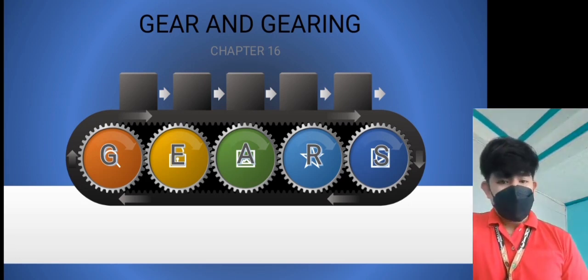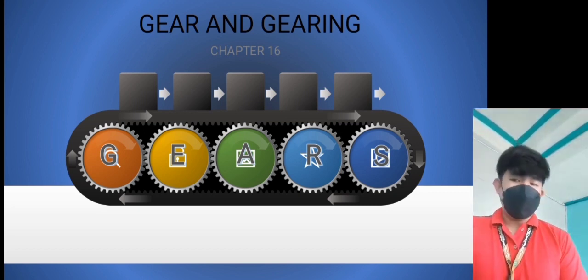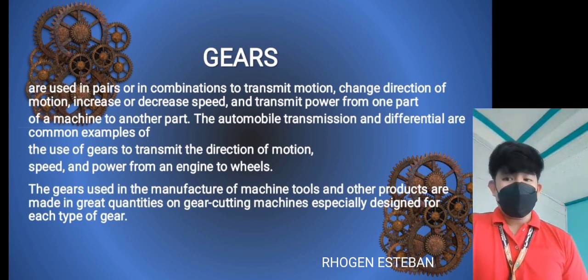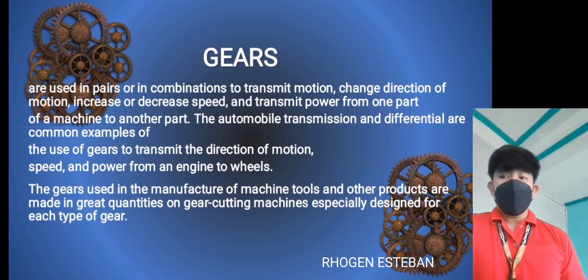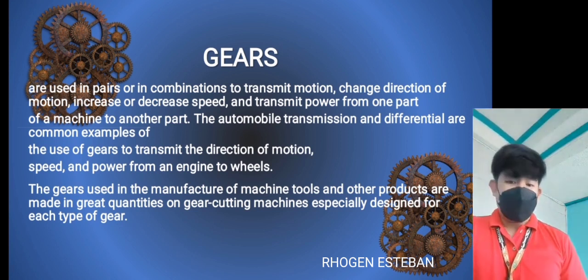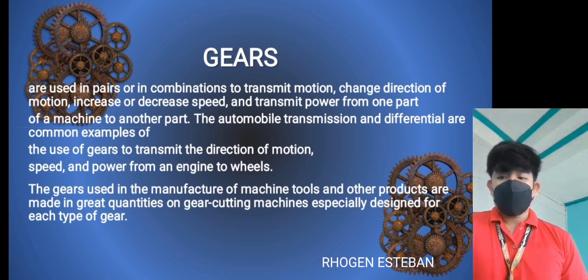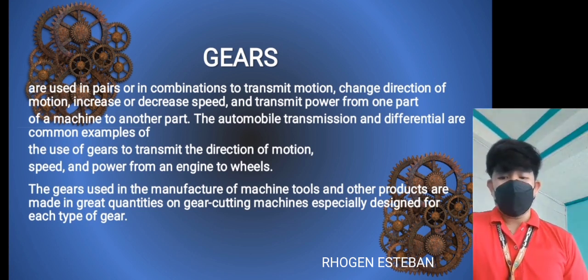Chapter 16: Gears and Gearing. Gears are used in pairs and combinations to transmit motions, change directions of motion, increase or decrease speed, and transmit power from one machine part to another. Automotive transmissions and differentials are common examples of the use of gears to transmit direction of motion, speed, and power from engine to wheels. Gears used in the manufacture of machine tools are made in great quantities using gear cutting machines.